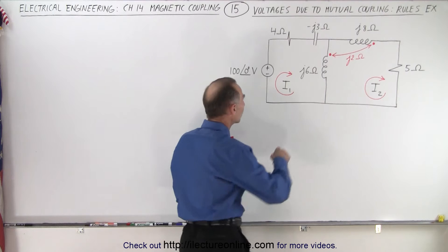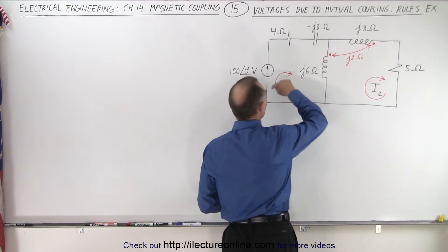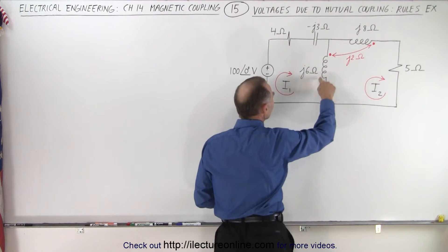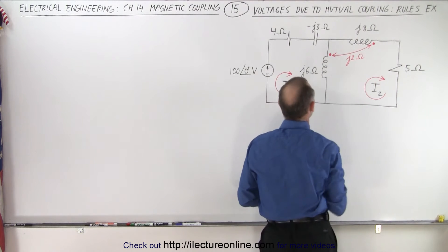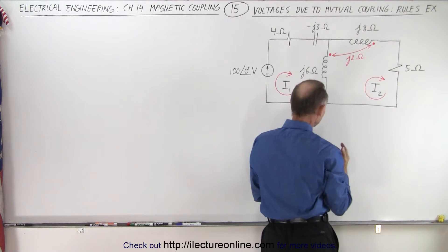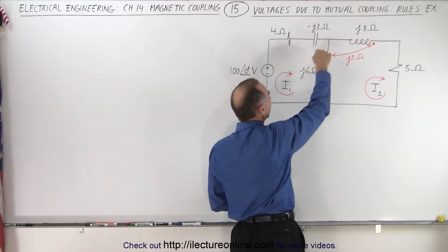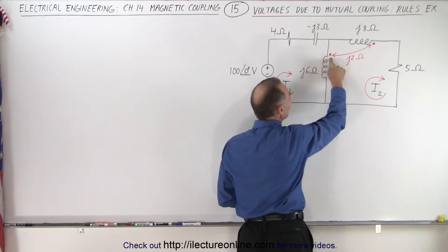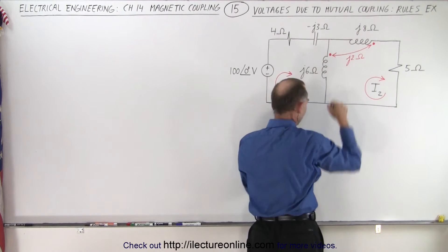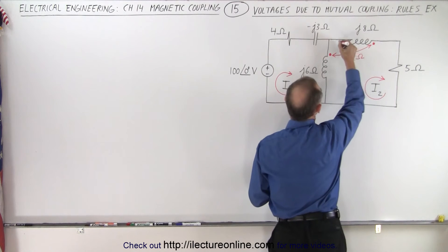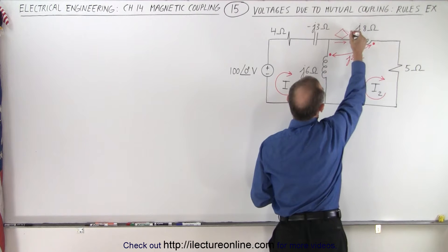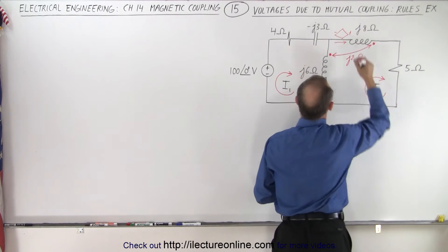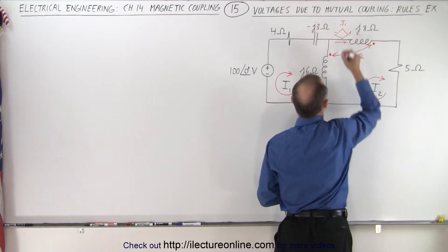We start with current I1. I1 will go through this inductor, and since there's mutual coupling, this will set up a current in the other inductor caused by I1. Notice I1 enters on the dotted side, which means the induced current will enter on the other side. So we have a current induced in this direction — positive on this side and negative on this side due to I1.